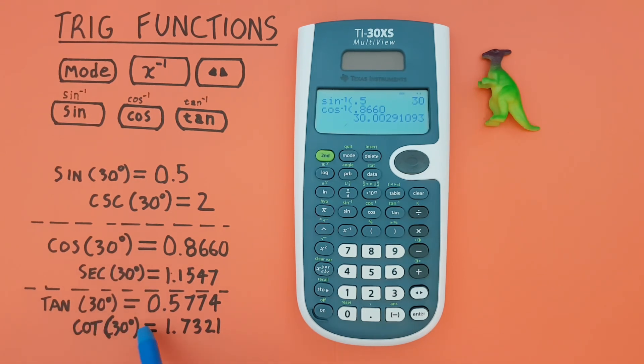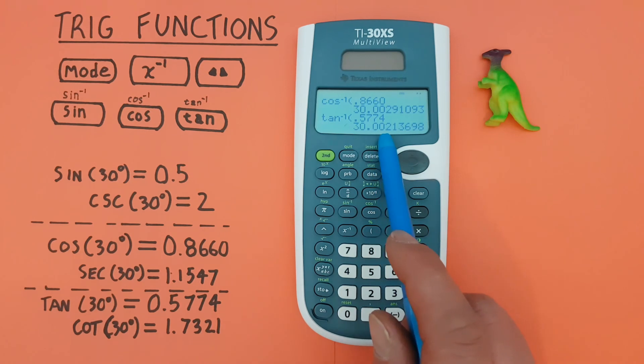And arc tan, if we enter 0.5774, and press enter, again, we get a result that rounds to 30 degrees.